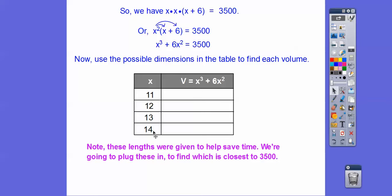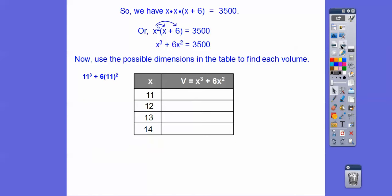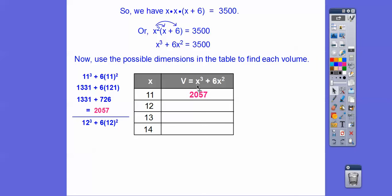Let's do 11. So 11 cubed plus 6 times 11 squared. Order of operations says we do exponents first: 11 squared is 121, and 121 times 11 more is 1,331. Then multiply 6 times 121, and add those together — we get 2,057. That's sort of close to 3,500, but not close enough. Let's try 12. 12 cubed plus 6 times 12 squared — 12 squared is 144, 12 cubed is 1,728. Multiply 6 times 144, add them together. Getting closer. Let's try 13.